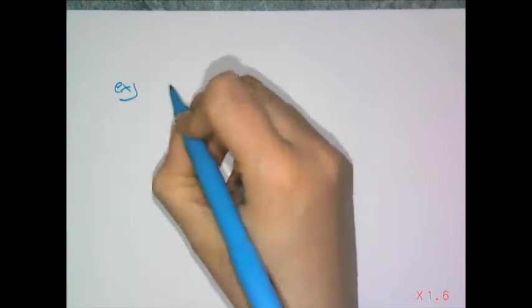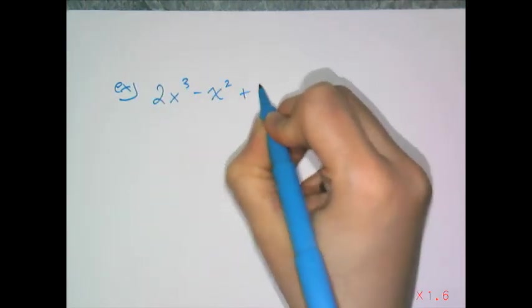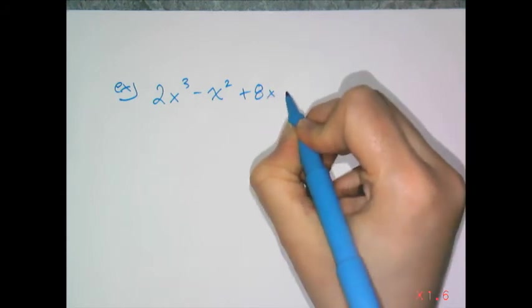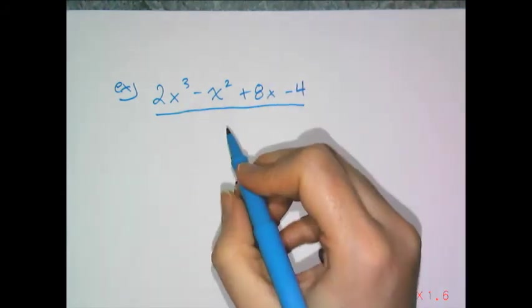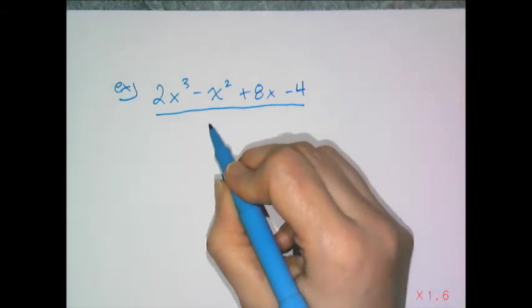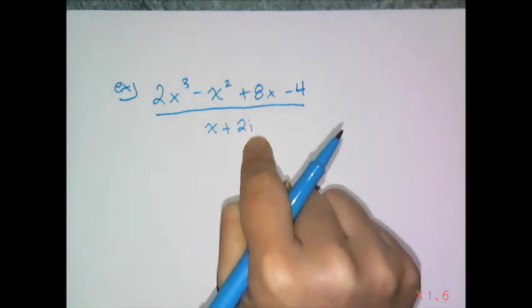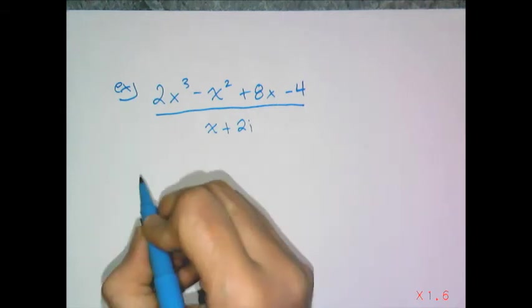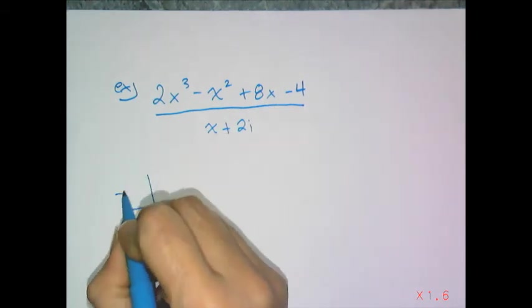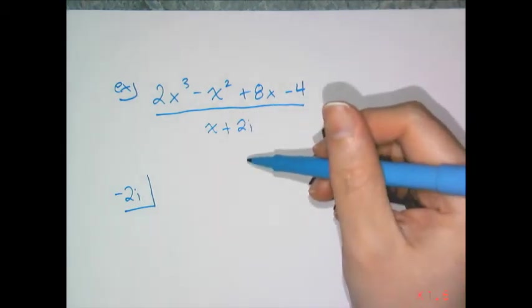Now let's try an example with complex coefficients, meaning I'm going to throw in an imaginary number, which you can totally do with synthetic division or long division. So if I have 2x cubed minus x squared plus 8x minus 4 and I want to divide it by x plus 2i, I remember that the algorithm says I'm dividing by x minus c and the c goes in the little box. So it's the opposite sign here. It's going to be a negative 2i that goes in the little box. Make sure you get that sign right.